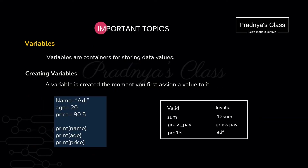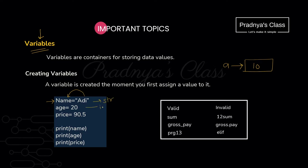From identifier, let's discuss variables, as this is also an important basic topic. Variables are used to hold values, but in Python, variables are name labels which are references to memory. Python allows dynamic typing, so there is no need to mention the data type of the variable at the beginning. The value assigned to the variable will decide its data type. For example, name is of string type, age is of integer, and price is of float type.